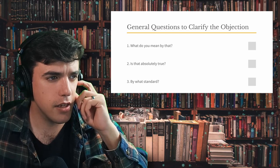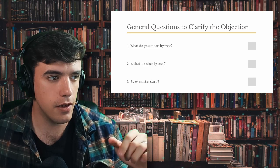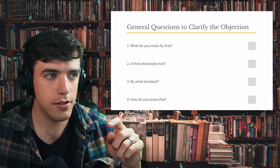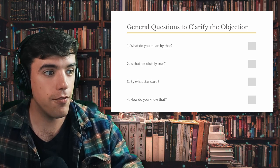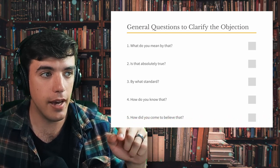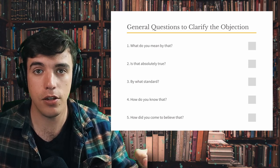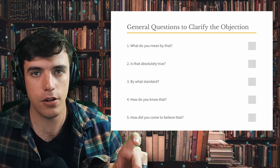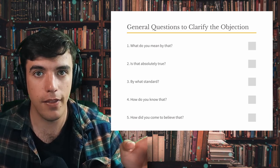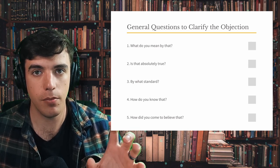Some of these look like they may be rewordings of the same question, but they're good to memorize anyway. Because the next one, how do you know that? So three and four kind of sound a little bit the same. Five, how'd you come to believe that? So four and five are very similar, but this is about memorizing questions and then using them. So those are two different ways to frame that same question. How do you know that? That's an epistemic question. Epistemology is how you come to know something.